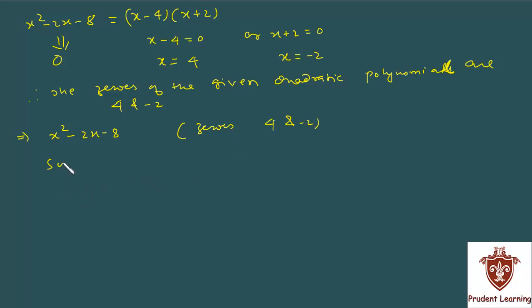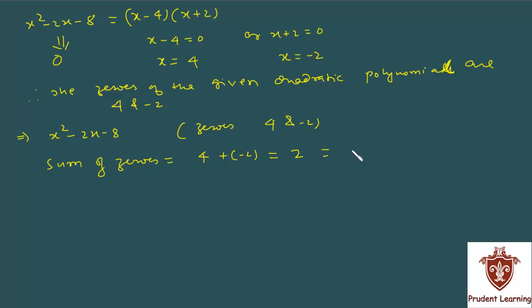Now, if we talk about the sum of zeros: 4 + (−2) = 2. And 2 can be written as −(−2)/1. The relationship is thus established between zeros and coefficients.